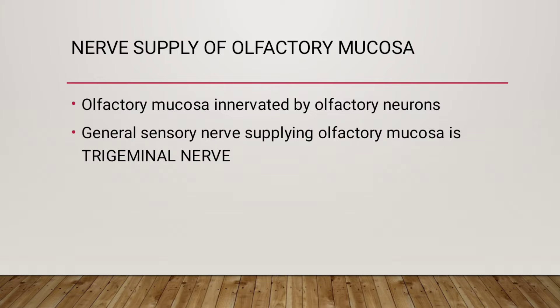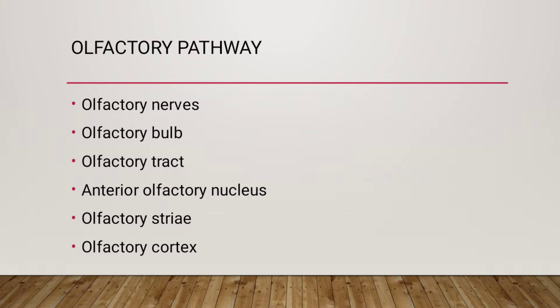The sensory nerve supplying the olfactory mucosa is the trigeminal nerve. The olfactory pathway involves olfactory nerves, olfactory bulb, olfactory tract, anterior olfactory nucleus, olfactory stria, and olfactory cortex. From the olfactory tract it goes to the medial and lateral olfactory areas, producing the sensation of smell.